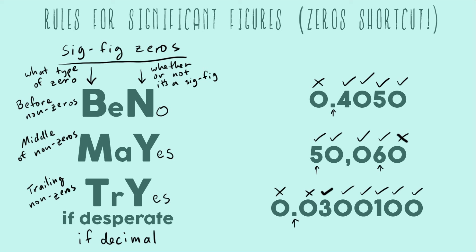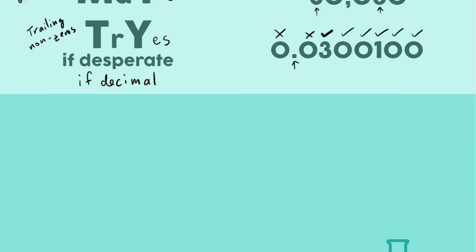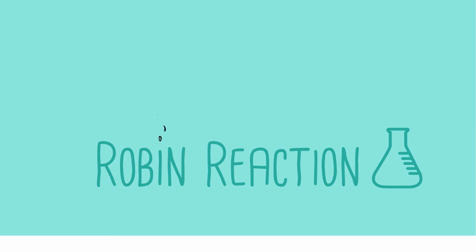And so if you remember this mnemonic Ben may try if desperate, I think that can help. I see students writing it on exams and so you always remember exactly what types of zeros are sig figs. That's all I have for you today. Thanks so much for watching and I hope you learned.